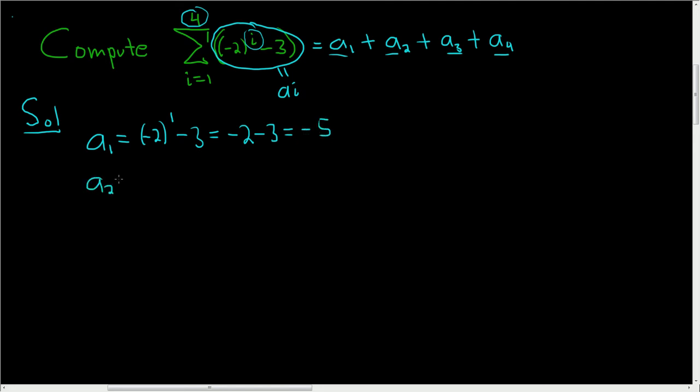a sub 2 is negative 2 squared minus 3. Negative 2 squared, well, 2 is even, so you just get positive 4 minus 3, which is equal to 1.